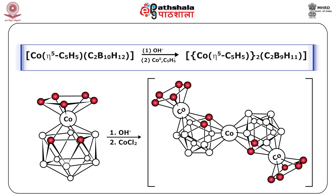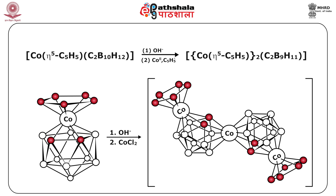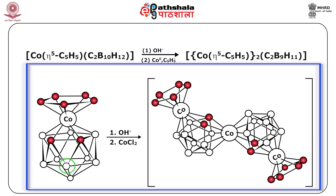For example, Co(eta5-C5H5)(C2B10H12) in the presence of hydroxide gives Co(eta5-C5H5)2(C2B9H11). The method is of potential use in preparing mixed metal clusters, for example cobalt plus nickel or cobalt plus iron, and can be extended to prepare more complicated cluster arrays. The figure shows the formation of mixed metal clusters, with the subrogated B atom indicated as a broken circle.